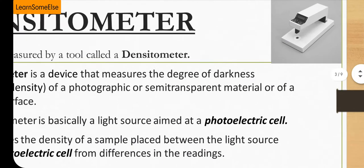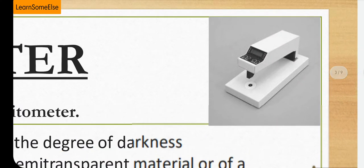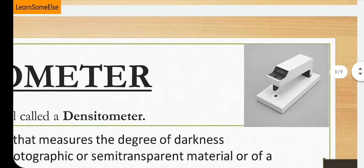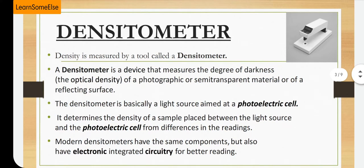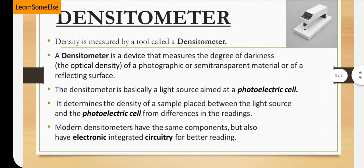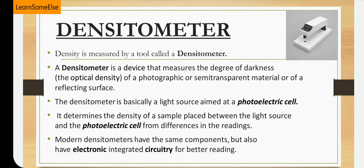As you can see here is the picture of a densitometer — it is an electric densitometer. A densitometer is a device that measures the degree of darkness of a photographic or semi-transparent material, or of a reflecting surface. The densitometer is basically a light source aimed at a photoelectric cell; it determines the density of a sample placed between the light source and the photoelectric cell.